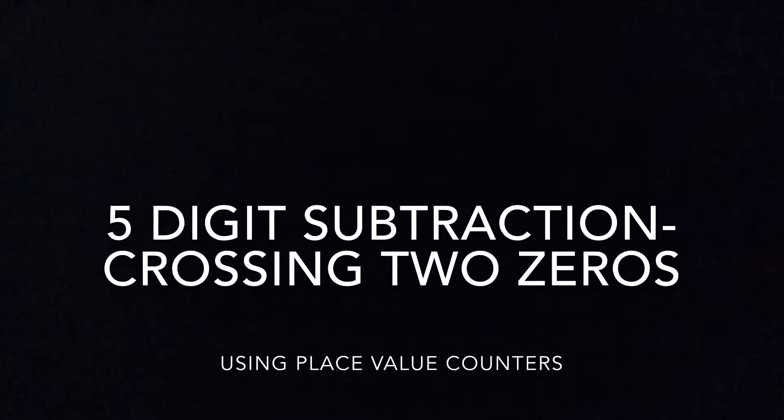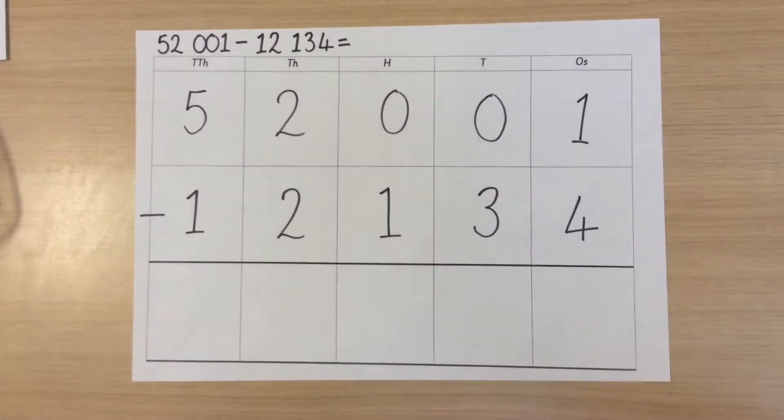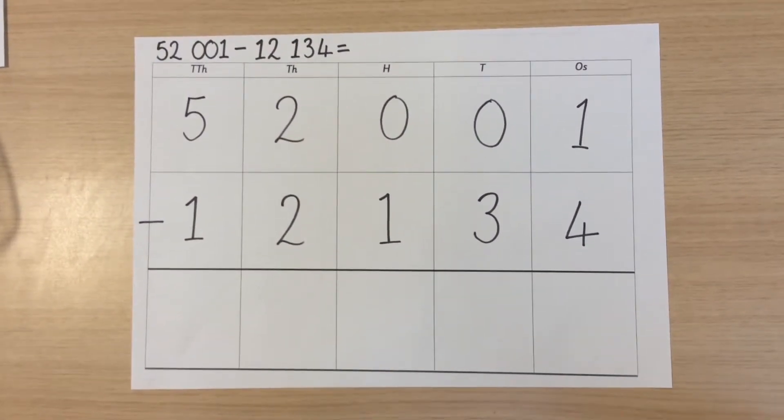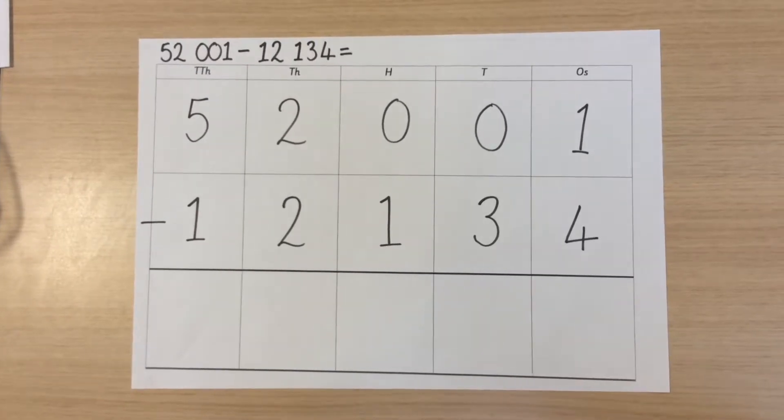Where we need to cross two zeros in order to exchange successfully. The calculation we'll be completing to model this is 52,001 take away 12,134.